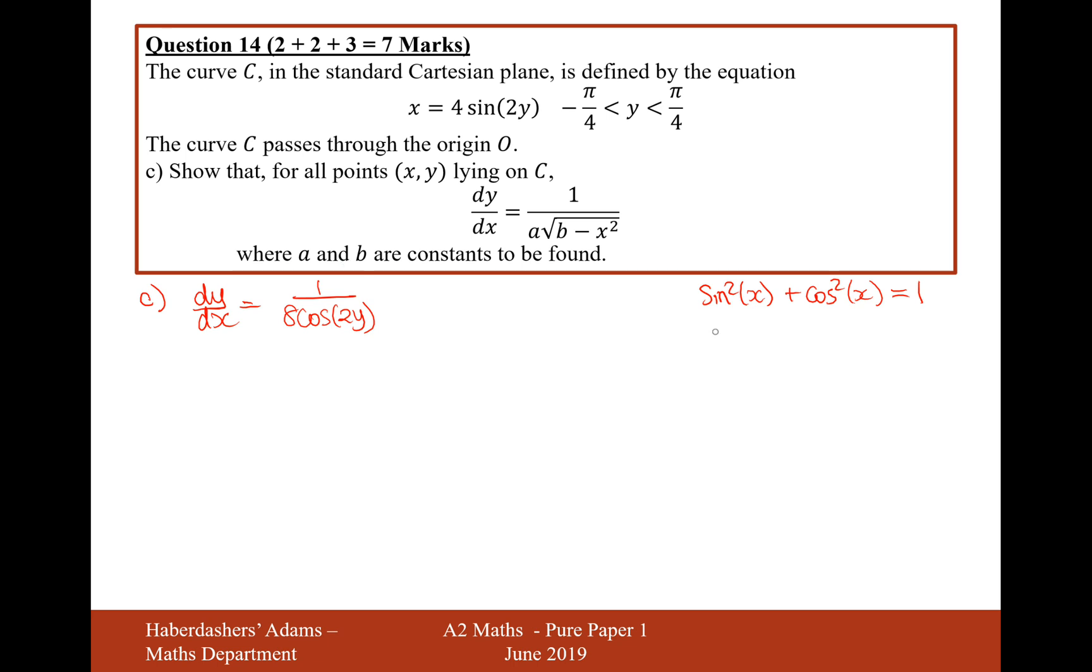Let's just replace x with the angle that we're working with here, which is 2y. So sine squared 2y plus cos squared 2y—as long as the angles are the same, this rule still works. Now I'm looking to turn cos 2y into something to do with sine, so if I subtract the sine squared 2y onto the other side I get cos squared 2y equals 1 minus sine squared 2y. And then if I take a square root I get cos 2y equals root 1 minus sine squared 2y.